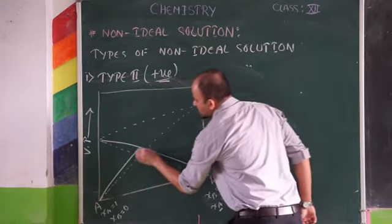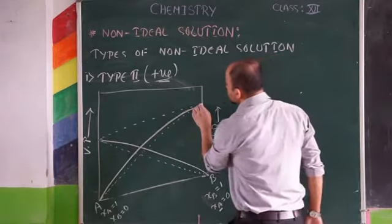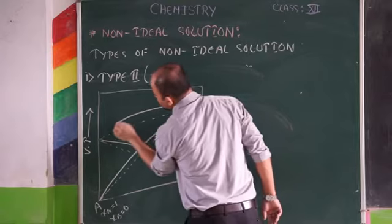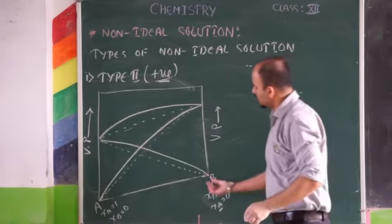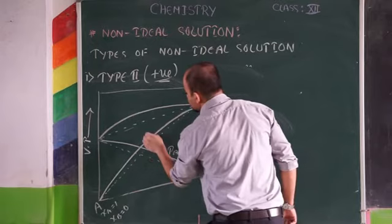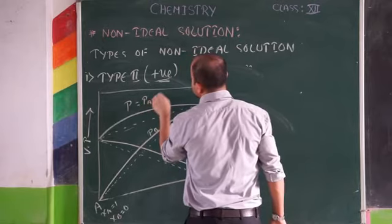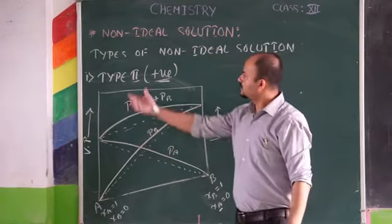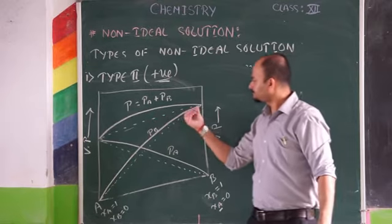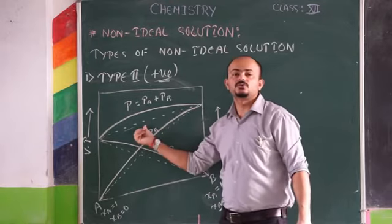Similarly for B as well, the actual partial pressure will be more than the ideal case. Therefore the total vapor pressure will also be more than the ideal total of P°A and P°B. This is the partial pressure curve for A, this is the partial pressure curve for B, and this is the total pressure curve — which lies above the ideal case. This is how large positive deviations look: the graph is above the ideal.